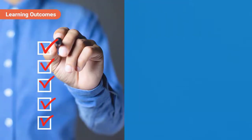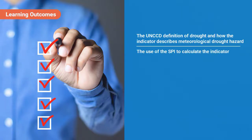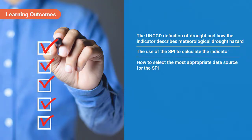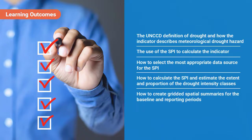We have reached the end of this video on SO3.1: Trends in the proportion of land under drought over the total land area. In this video, you familiarised yourself with UNCCD's definition of drought and how the indicator describes meteorological drought hazard. You learnt about the use of SPI to calculate the indicator, how to select the most appropriate data source for the SPI, how to calculate the SPI and estimate the extent and proportion of the drought intensity classes, and how to create gridded spatial summaries for the baseline and reporting periods.